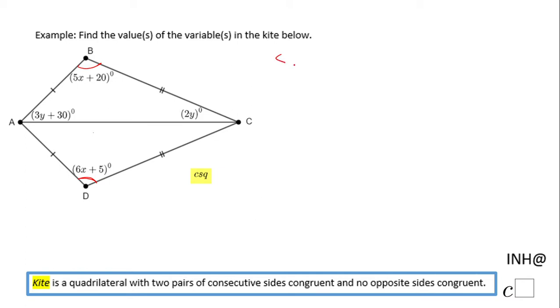So angle B is congruent to angle D, which means the measure of angle B equals the measure of angle D. We can write an equation now, which is 5x plus 20 equals 6x plus 5, and we need to find x. I'll subtract 5x on both sides and we have 20 equals x plus 5. The last step: subtract 5 and we end up with x equals 15.